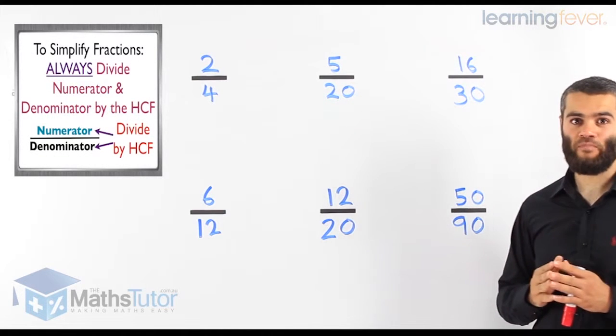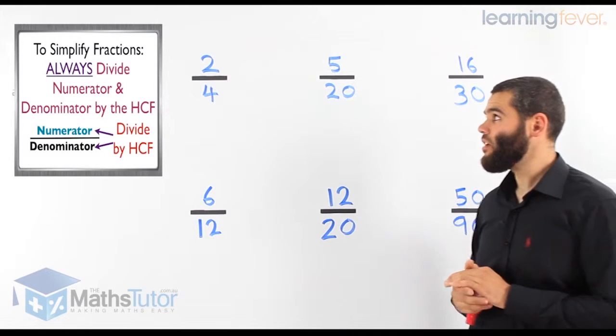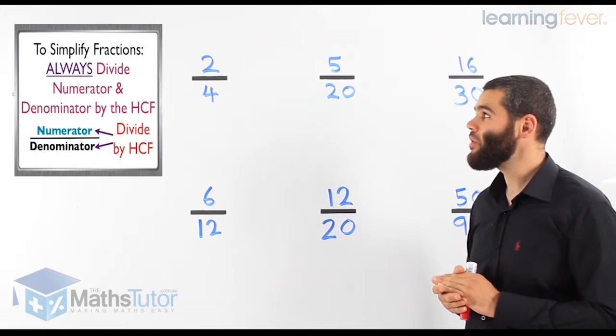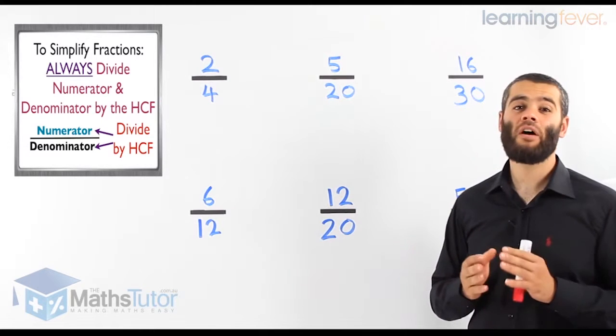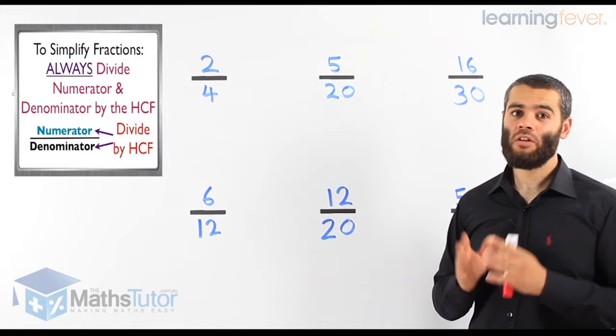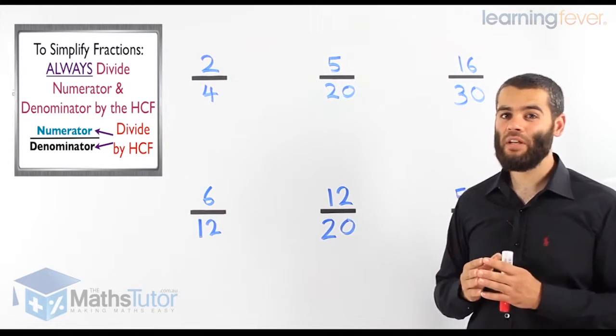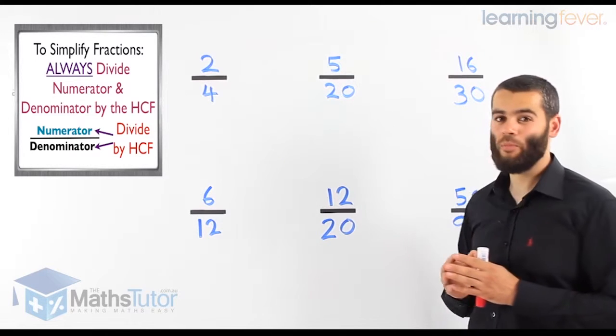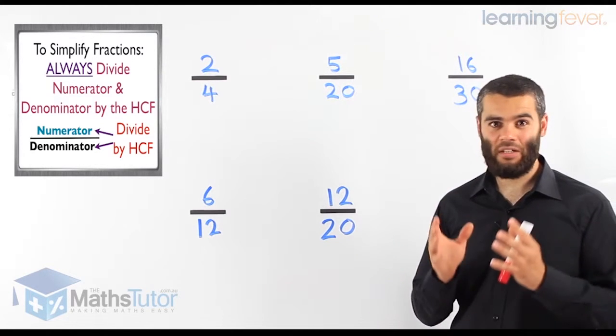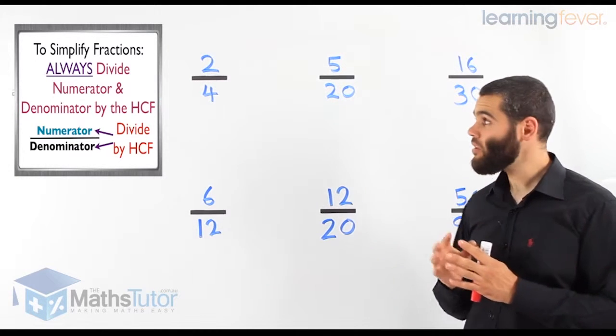So how do we simplify? Well, let's look at the theory. The theory says that we always divide the numerator and the denominator by the HCF. What's a numerator and denominator? Well, the numerator is the number that's on top of the fraction bar, and the denominator is the one down the bottom. I like to remember it: denominator, D for down, and the numerator is right on top of that.